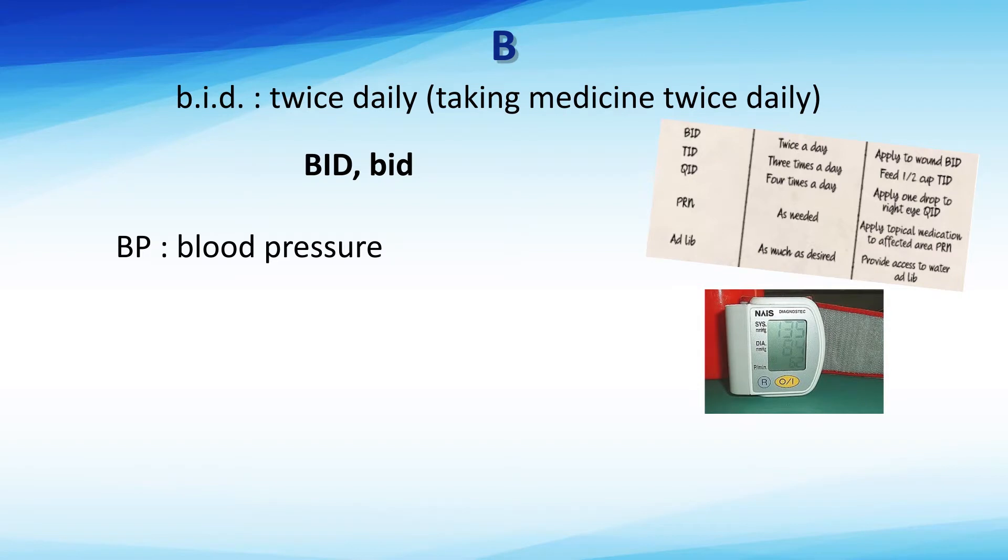The BP is blood pressure, which is the pressure of the blood within the arteries. It happens because of heart contraction. It is recorded as two numbers, systolic number over diastolic number.